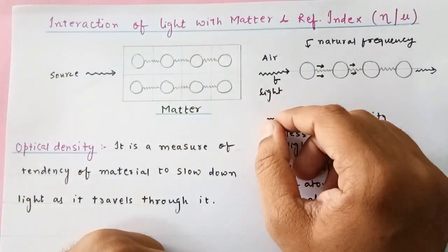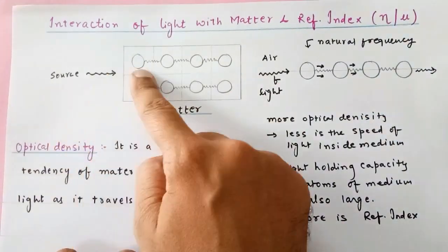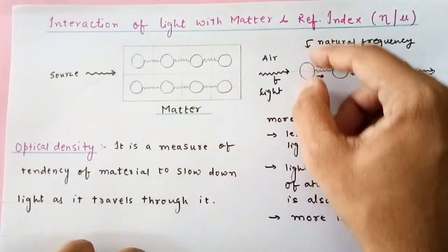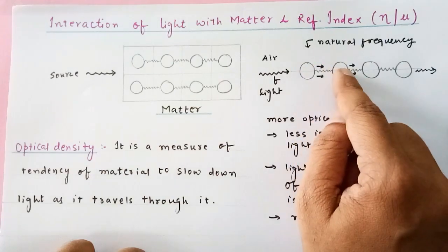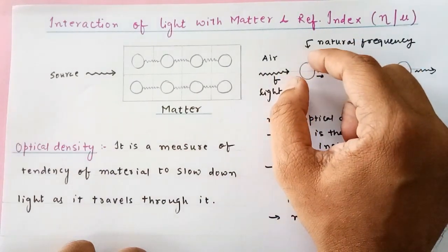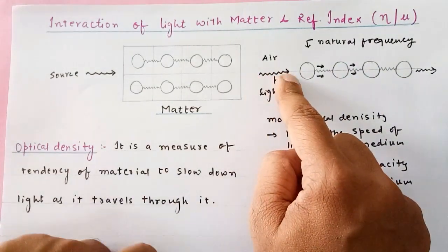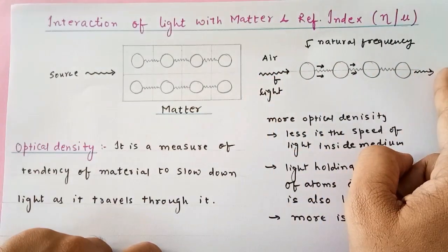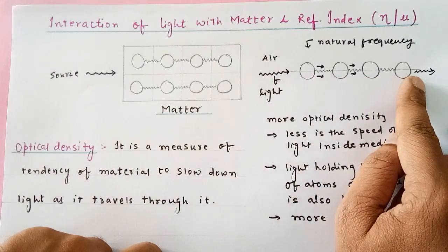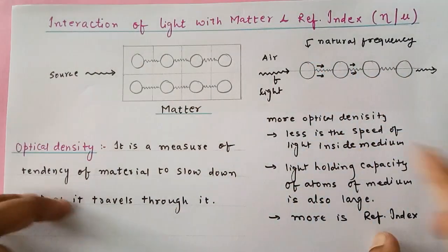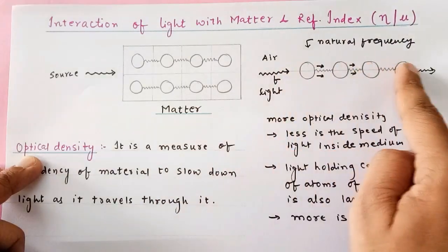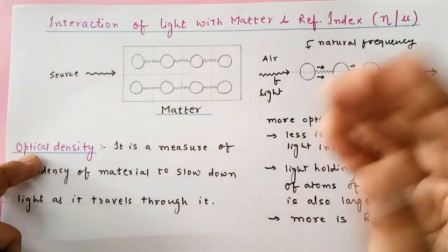Let us recap what we have studied: when light is impinged upon the atoms of matter, the atoms absorb the light, vibrate, and pass the energy to neighboring atoms. If the frequency of the light matches the natural frequency, the light-holding capacity increases, so the light takes a very long time to exit the matter — meaning the speed of light inside decreases. Optical density is a property of a medium: more optical density means less speed of light and more refractive index.